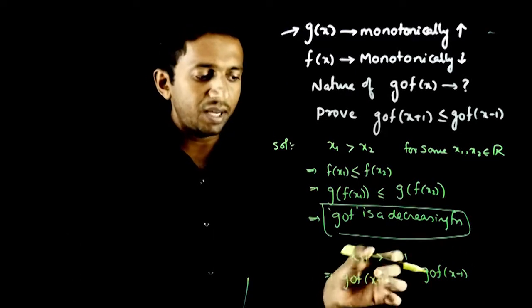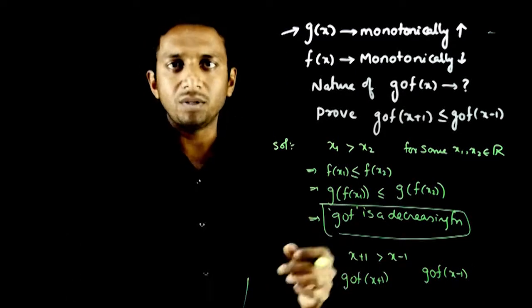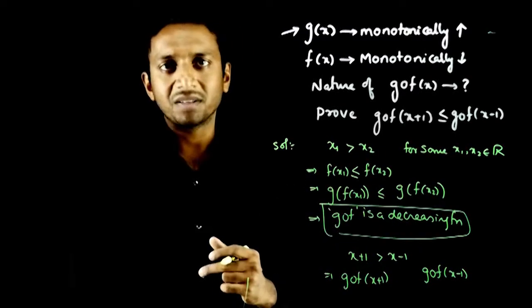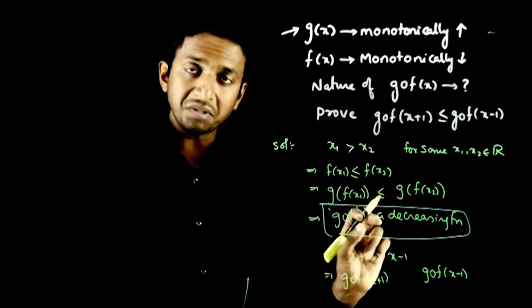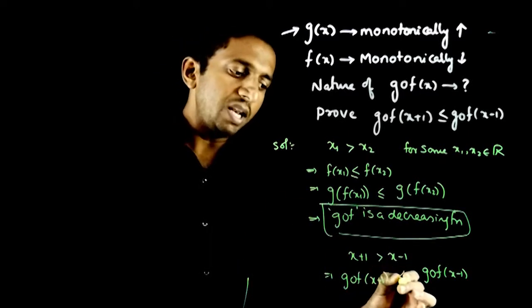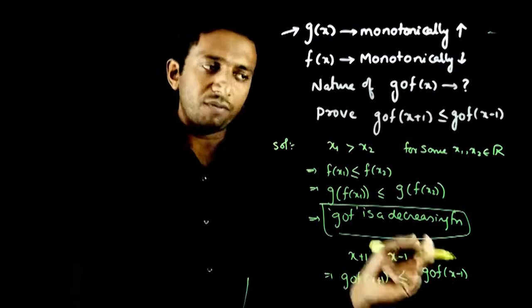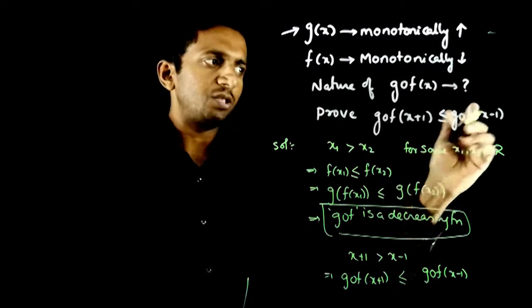After applying gof, the sign will either stay the same or flip. That depends on whether gof is increasing or decreasing. If it's an increasing function, the sign stays the same; if decreasing, the sign flips. So this will be less than or equal to gof(x-1), which is what you are asked to prove.